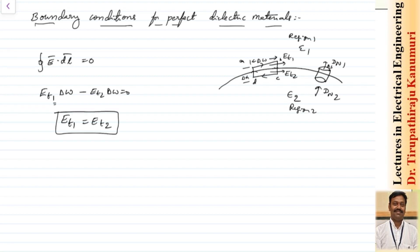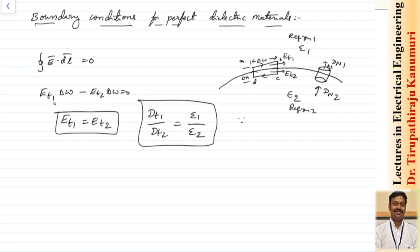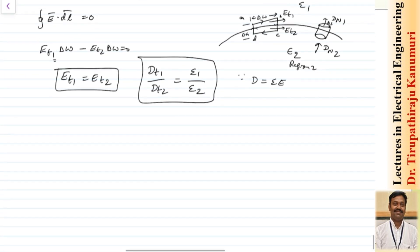Tangential component 1 equals tangential component 2. Since D equals epsilon times E, we can tell that Dt1 divided by Dt2 equals epsilon 1 divided by epsilon 2.